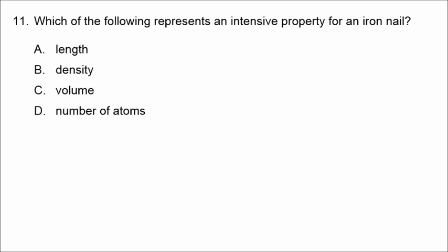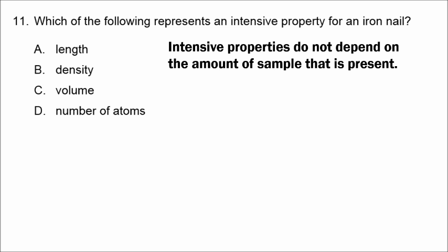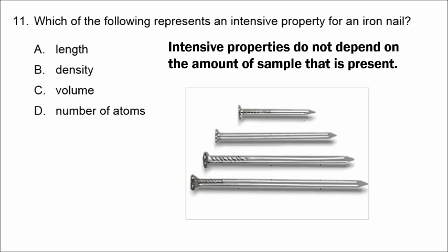In number eleven, an intensive property is something that does not depend on the amount of sample present. For an iron nail, different nails would have different length, volume, and numbers of iron atoms, but all nails would have the same density. Density is the intensive property.